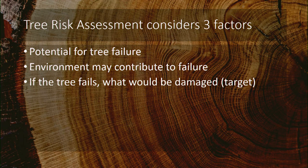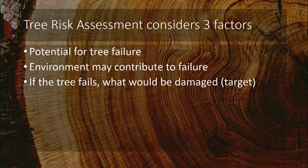Tree risk assessments consider three factors: the potential for the tree to fail; the environment that may contribute to that failure; and if the tree fails, what would be damaged — we call that the target. Trees out in the open away from everything carry relatively low risk because the frequency of someone or something being underneath them is low. But a tree near a house, sidewalk, street, or driveway greatly increases the risk.